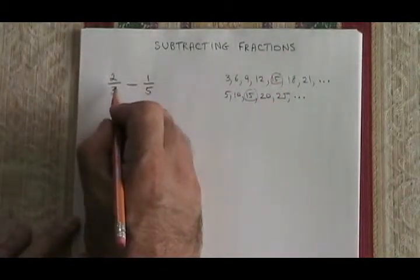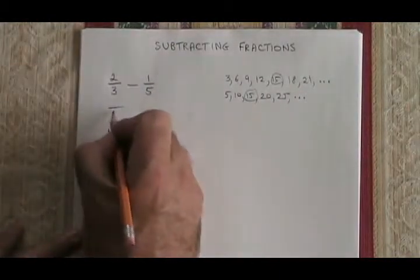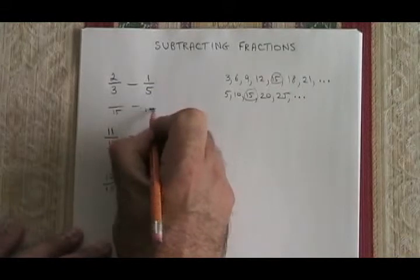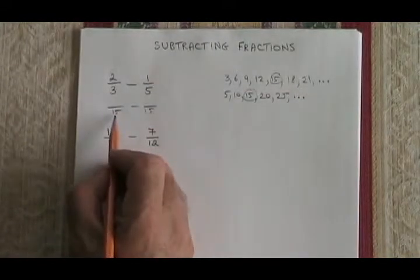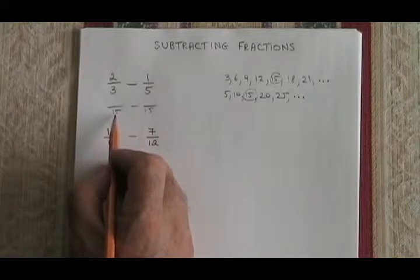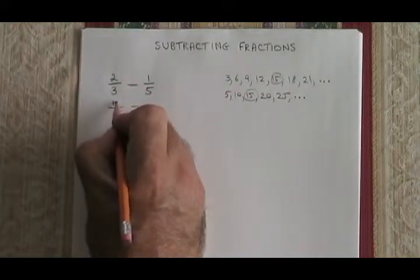So I want to convert two-thirds and one-fifth into fractions over 15. The 3 has to be converted into a 15, and I do that by multiplying it by a 5. So therefore, the 2 has to also be multiplied by a 5, and 2 times 5 is 10.